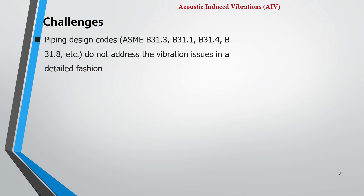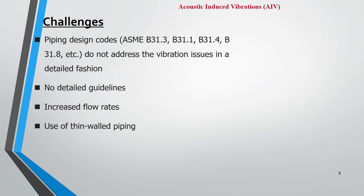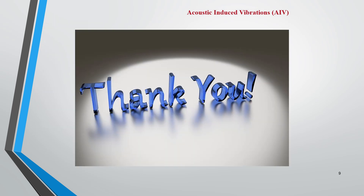The challenges are that piping design codes like ASME B31.3, B31.1, or pipeline codes like ASME B31.4 and B31.8 do not address vibration issues in a detailed fashion. There are no detailed guidelines provided in any code or standard. Because of this, along with increased flow rates and use of thin-walled pipes, vibration is happening frequently. That concludes the introduction module. We will now be learning the actual topic of our course — acoustic induced vibration. Thank you, let's move on to Module 2.